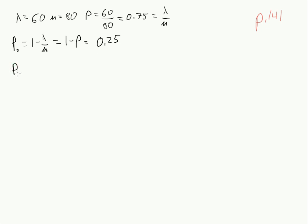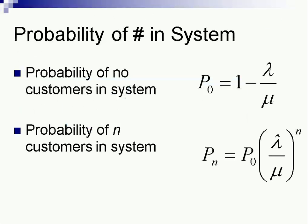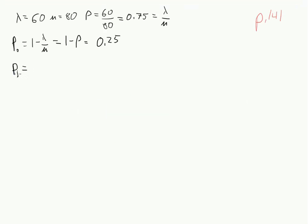So the probability that we have one person in the system, let's go back to that spreadsheet, and see that the probability of having n people is equal to P0 times lambda divided by mu. So let's write this in general. The probability of having n people is the probability of zero people times lambda divided by mu raised to the nth power, or another way to write that is P0 times rho raised to the nth power.